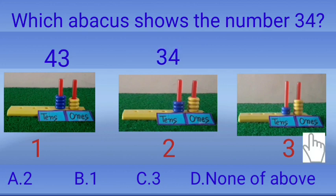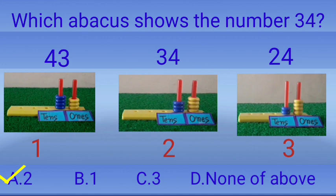Now kids, we will count the beads in the third abacus. Let's count: one, two — two beads in tens row; one, two, three, four — four beads in one's row. Third abacus shows the number twenty-four. The right answer is option A — second abacus shows the number thirty-four.